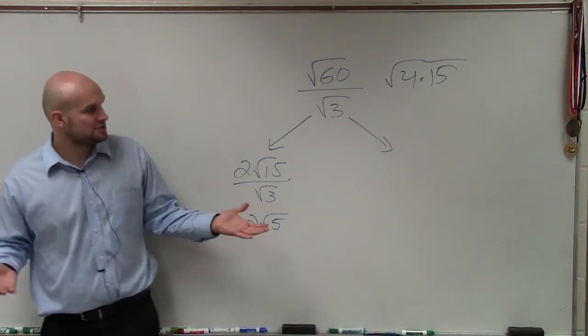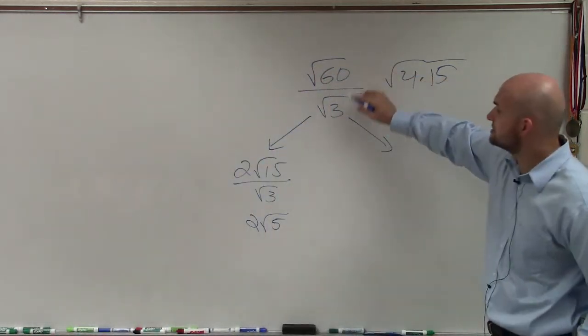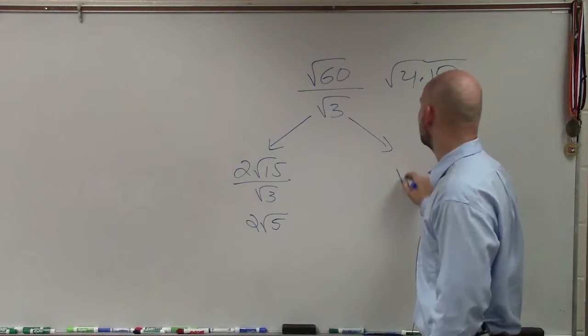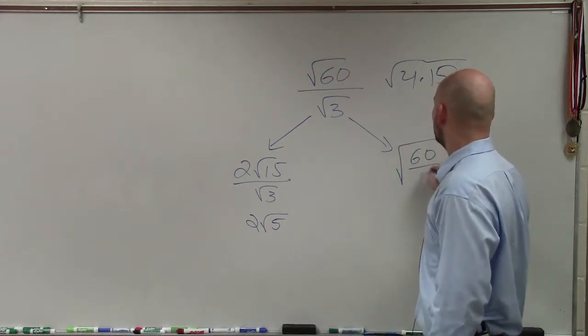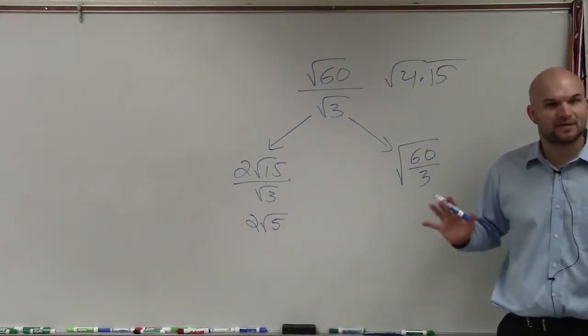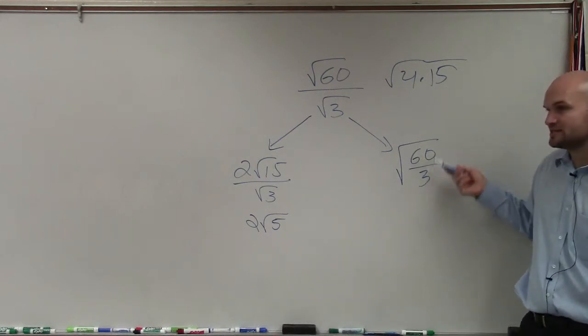The other way, ladies and gentlemen, you could look at this is √60 divided by √3 is the same thing as √(60 over 3). It's the exact same thing. So what is √(60 over 3)?